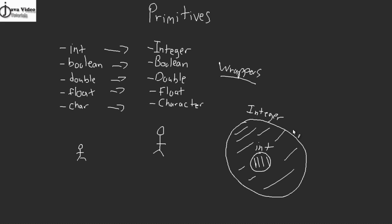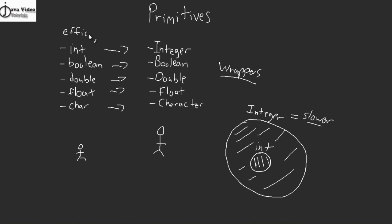These object counterparts are known as wrappers. Think of what an int is capable of as a small circle — that represents the functionality of what an int can do in Java. The Integer counterpart wraps the int primitive, so the larger circle represents the Integer wrapper. The Integer has far more functionality than the int primitive by itself. The Integer wrapper can carry out all the tasks that the int primitive can do, and then some. But the only drawback is that because the Integer can do so much more, it's a little bit slower and less efficient.